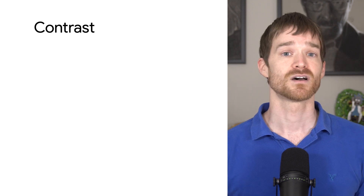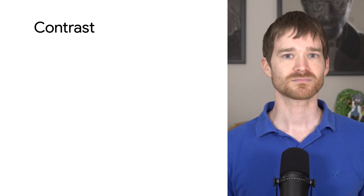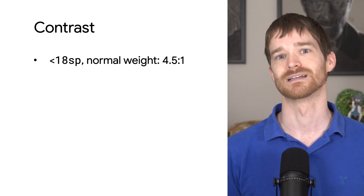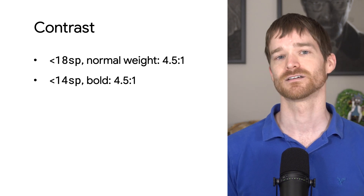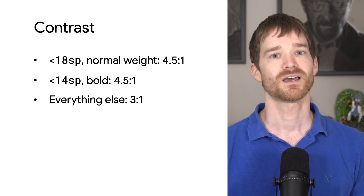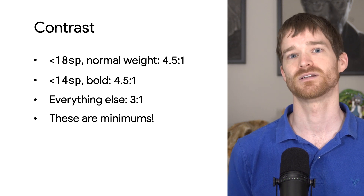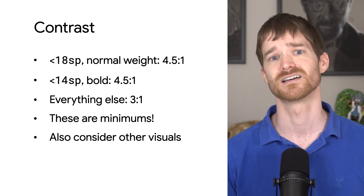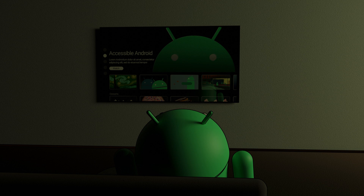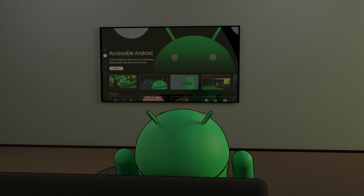Similar to colors, contrast is really important for accessibility. A general guideline is that text smaller than 18 SP, or bold and smaller than 14 SP, needs to have a contrast ratio of at least 4.5 to 1. All other text should have a contrast ratio of at least 3 to 1. You should also consider these guidelines for other important visuals, such as icons. App designs need to consider not only potential visual impairments, but also that environmental factors play a role — some TV panels have better color reproduction than others, and some users will be watching TV in the daytime with a lot of glare. When in doubt, prefer extra contrast.